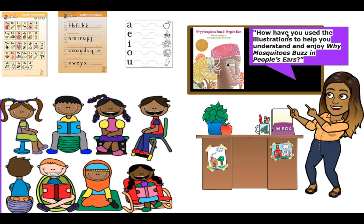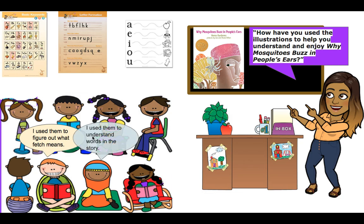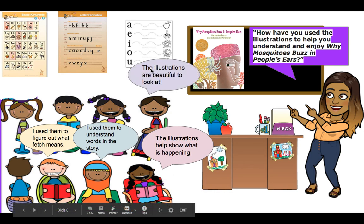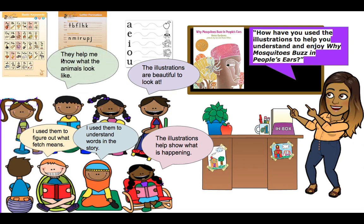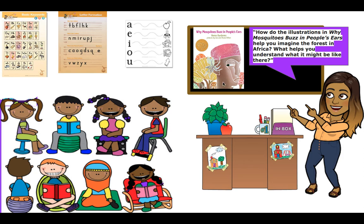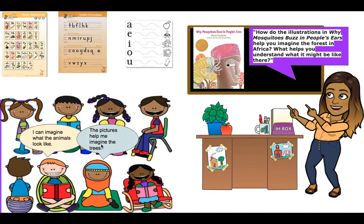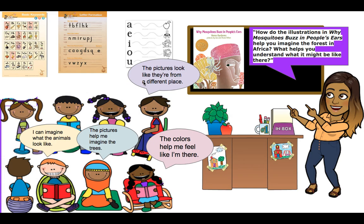Now that we did that, friends — how have you used the illustrations or the pictures to help you understand and enjoy Why Mosquitoes Buzz in People's Ears? I used them to figure out what 'fetch' means. I used them to understand words in the story. The illustrations help show what is happening. The illustrations are beautiful to look at. They help me know what the animals look like. And how do the pictures help you understand or imagine what a forest in Africa would look like? The colors help me feel like I'm there. The pictures look like they're from a different place.